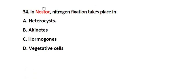Question number 34. In Nostoc, nitrogen fixation takes place in: Option A. Heterocyst, Option B. Akinetes, Option C. Hormogonia, Option D. Vegetative cells. The correct answer is Option A. Heterocyst.